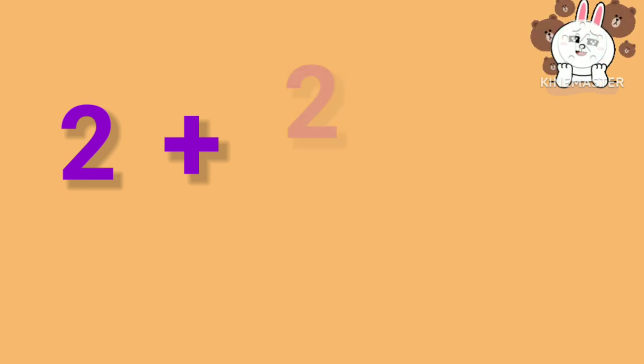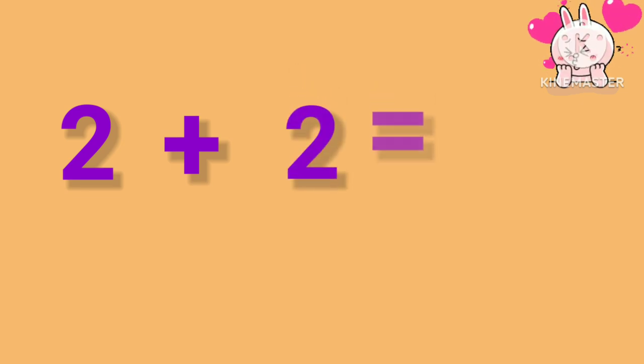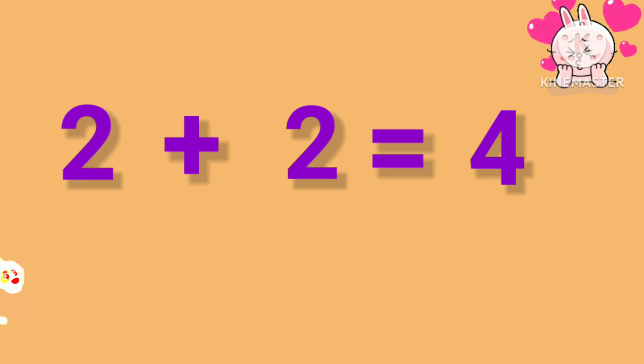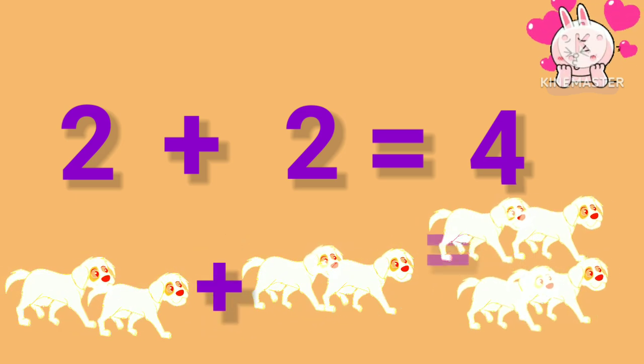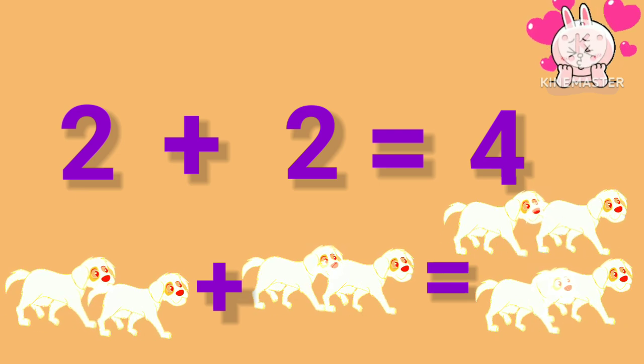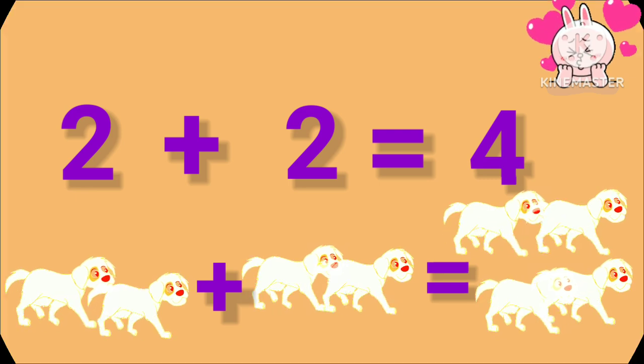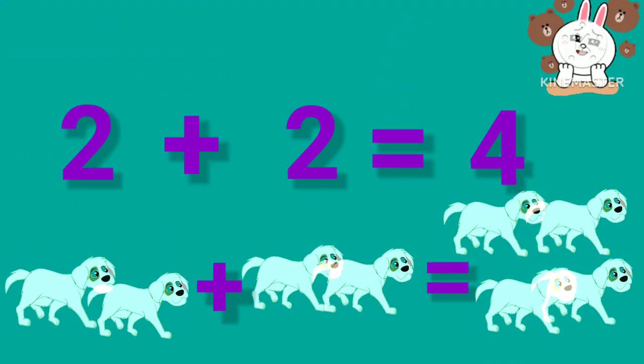2 plus 2. 2 plus 2 is equal to 4. 2 dogs plus 2 dogs is equal to 4 dogs.